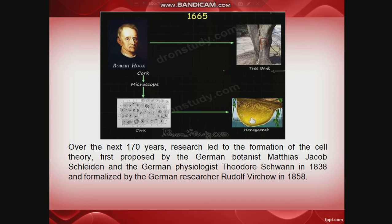Cell theory was first proposed by two great scientists — German botanist Matthias Jakob Schleiden and German physiologist Theodor Schwann in 1838 — and was finally formalized by German researcher Rudolf Virchow in 1858. Cell theory states that all living organisms are made up of cells, cells are capable of performing all life processes individually, and all new cells are formed only from a pre-existing cell.